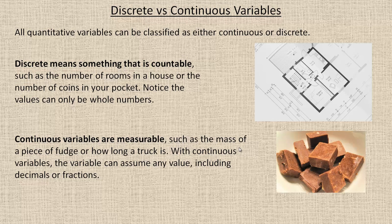Now continuous variables are measurable, such as the mass of a piece of fudge from the previous example, or how long a truck is. Your truck could be 5 meters, which is a whole number. But it could also be like 5.4 meters. So continuous variables can assume whole number values, but also any value in between those whole numbers. Any decimals, any fractions as well.